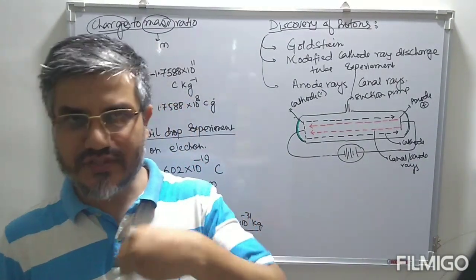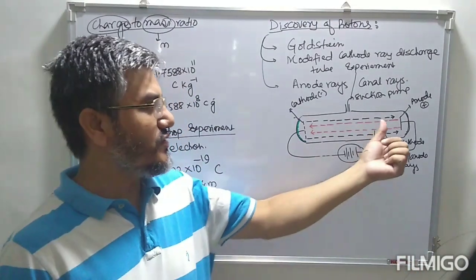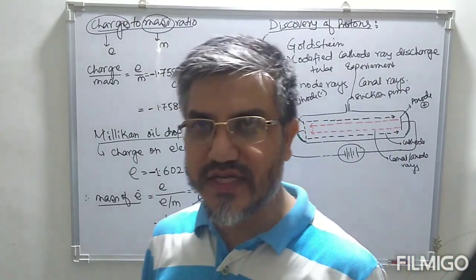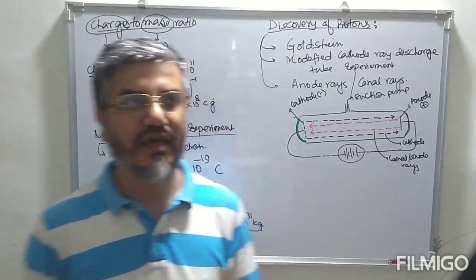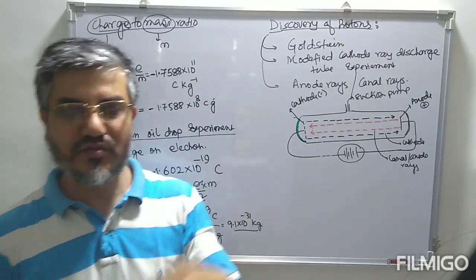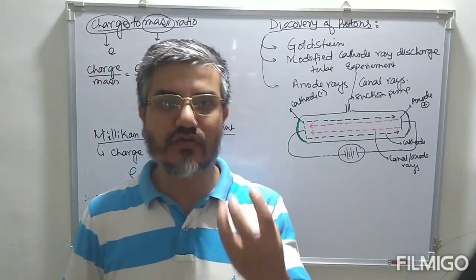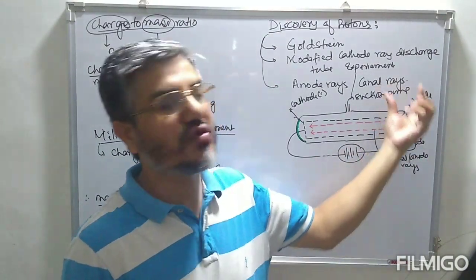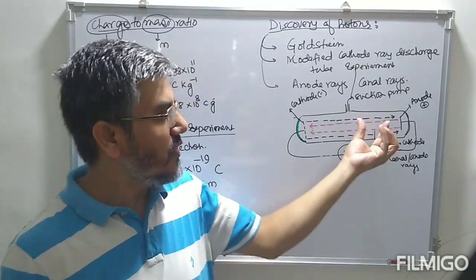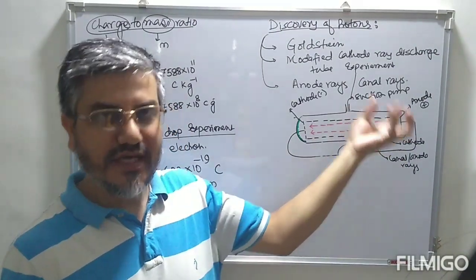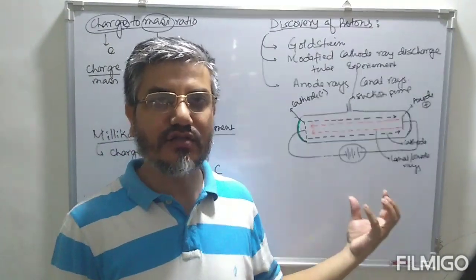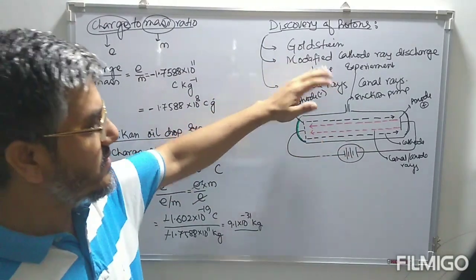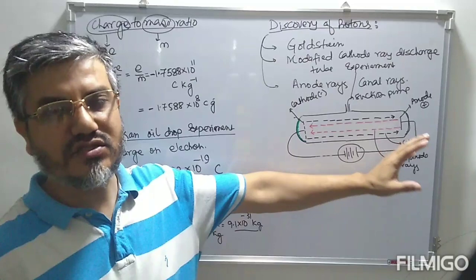So hydrogen plus (H⁺) is known as a proton. Hydrogen gas taken inside the discharge tube produces H⁺ — hydrogen with one positive charge. This is the proton. This is the discovery of the proton by Goldstein using the modified cathode ray discharge tube experiment.